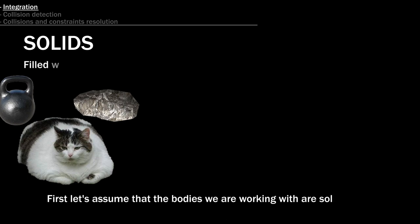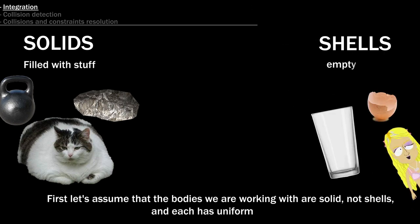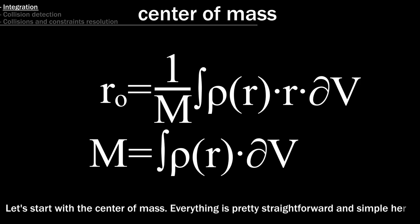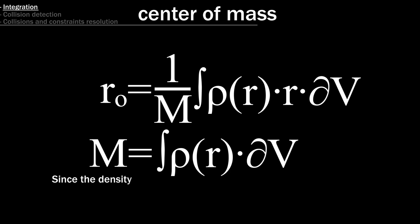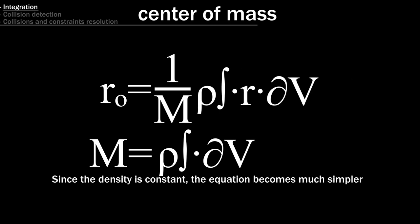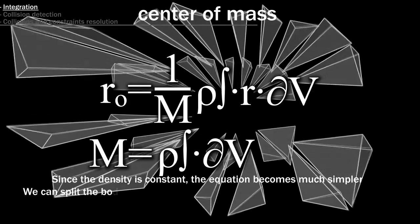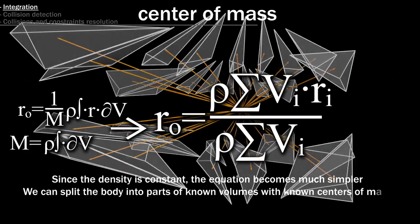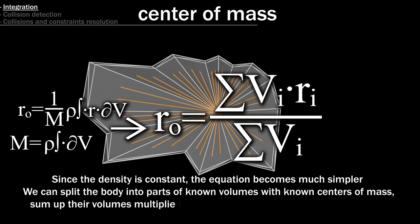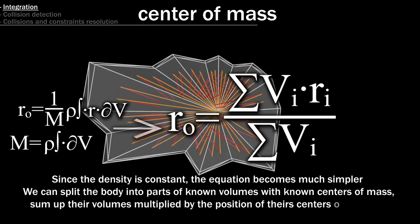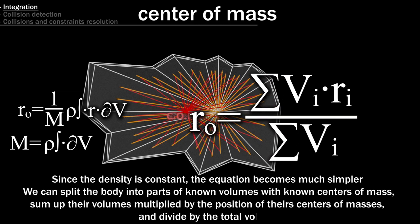First let's assume that the bodies we are working with are solid, not shells, and each has uniform density. Let's start with the center of mass. Everything is pretty straightforward and simple here. Since the density is constant, the equation becomes much simpler.